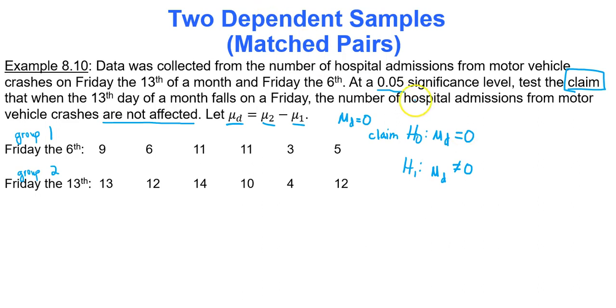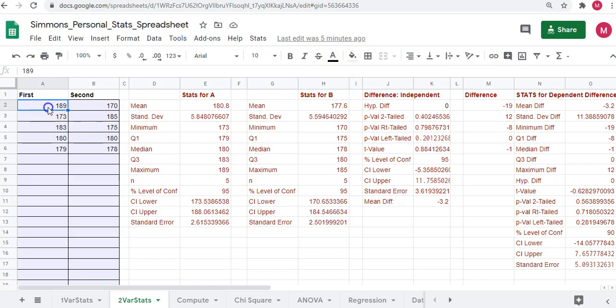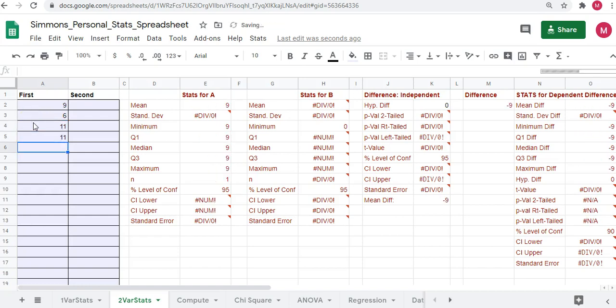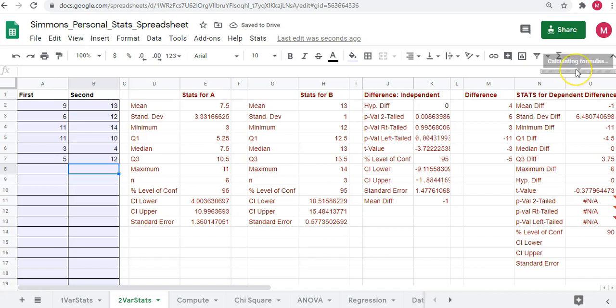What we have to do now is use Google Sheets. Let's go to Google Sheets and clear out our data that's in column A and B. Remember we're on the two variable stats tab. Starting in cell A2, type in group 1's data values. Make sure you click enter after each entry, not the down button. Give the Google Sheets spreadsheet some time to calculate. While it's calculating, it's a good time to discuss what type of test is this?